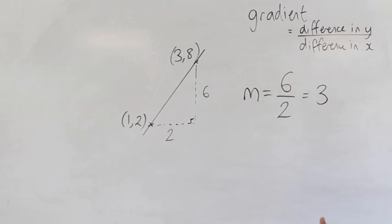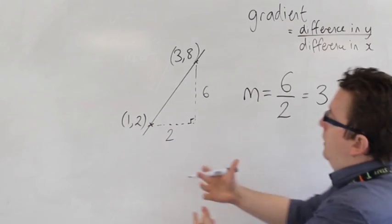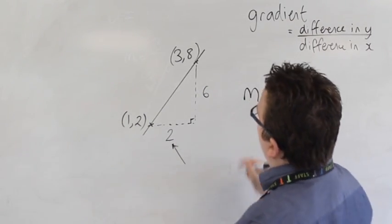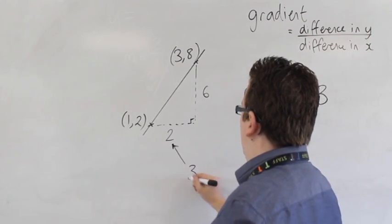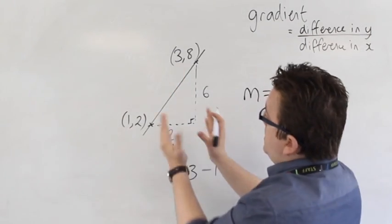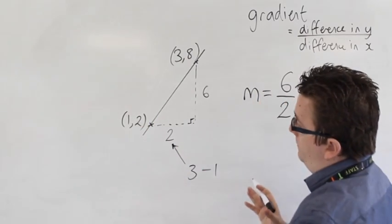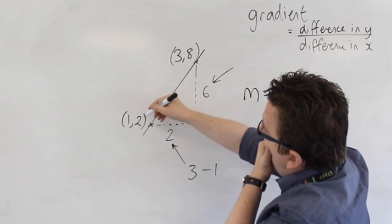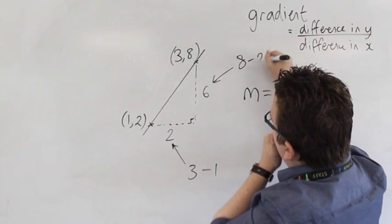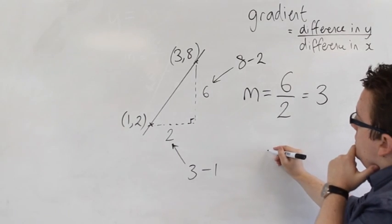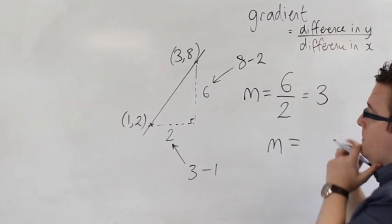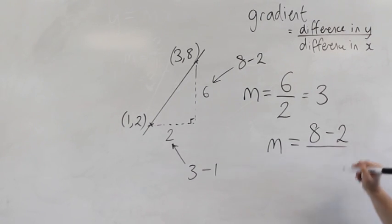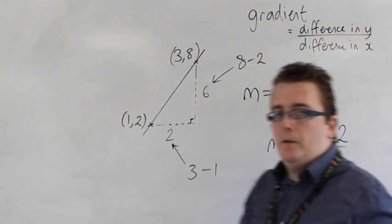Now, what are the actual things that we're doing here? What actual sums are we doing? Well, the 2 has come from doing 3 take away 1 - finding the difference between 1 and 3. The 6 has come from doing 8 take away 2. So we can say that the gradient was actually from finding 8 take away 2, divided by 3 take away 1.